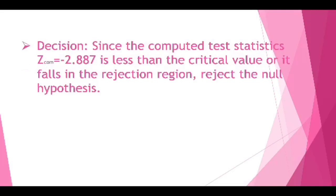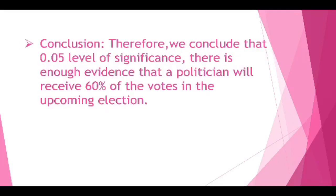Step 5: Since the computed test statistic z equals negative 2.887 is less than the critical value and falls in the rejection region, we reject the null hypothesis. Conclusion: Therefore, at 0.05 level of significance, there is enough evidence that the politician will not receive exactly 60% of the votes in the upcoming election.